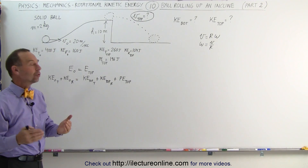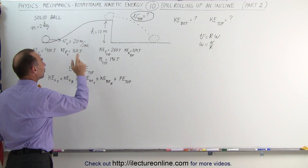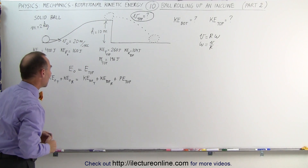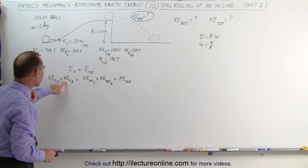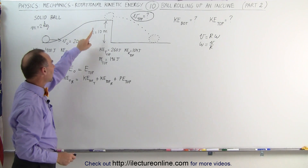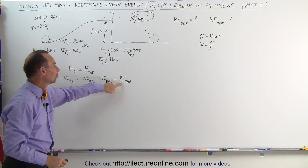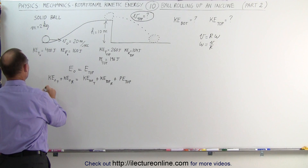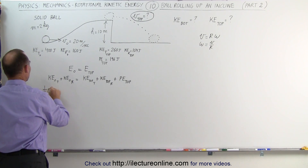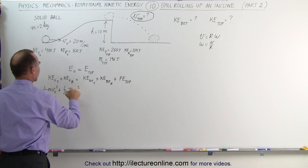Now we're going to use the same equation — the initial energy equals the energy at the top — to find the velocity at the top. At the bottom we have both translational kinetic energy and rotational kinetic energy. At the top we have translational kinetic energy, rotational kinetic energy, and potential energy. The equation is: one-half mv-initial squared plus one-half I omega-initial squared.